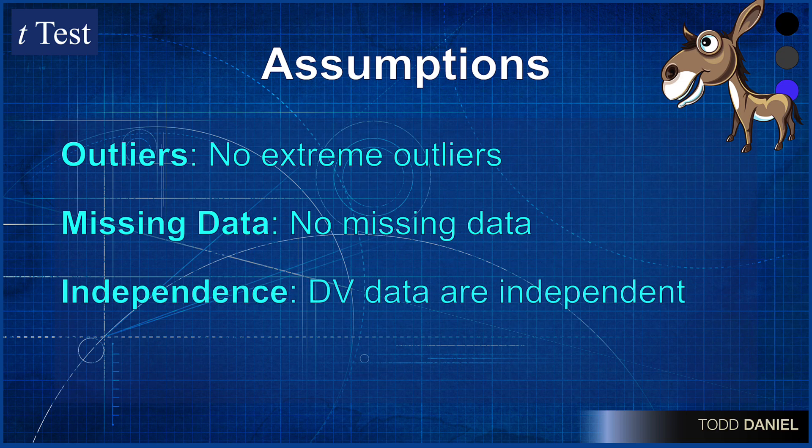The third assumption is that the dependent variable data are independent. Scores in one part of our sample are not influencing scores in another part of the sample.